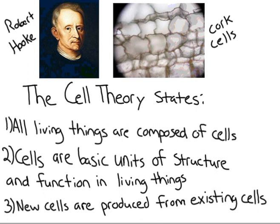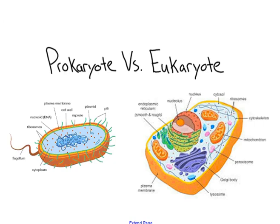So all the new cells that are constantly generated in your body are coming from existing cells. No new cell is spontaneously created — it comes from an existing cell. There are a lot of different cells on our planet.